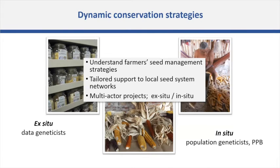In conclusion, to support dynamic conservation strategies, first we need to understand farmers' management of agrobiodiversity — especially during challenging events — so we can promote more tailored support to help them deal with local crises. We also need to help seed system networks through a combination of conservation and breeding approaches, including creating partnerships with long-term conservation efforts that ex situ gene banks can provide — to enhance crop diversity in a way that is consistent with different farmer production systems and different environments.